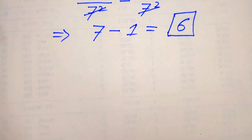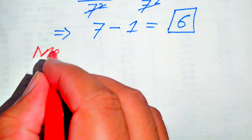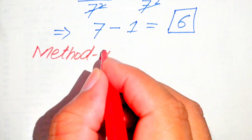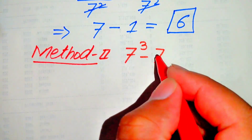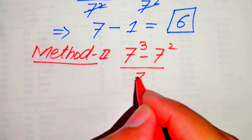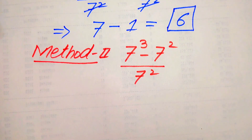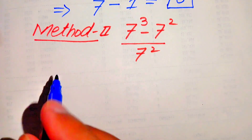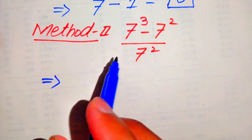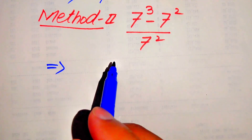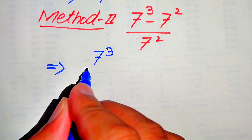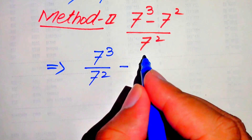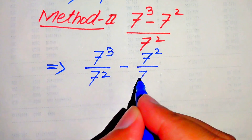Now we move to the second method. We rewrite the given question: 7 cubed minus 7 squared, divided by 7 squared. In the second method, we begin by breaking this fraction, writing it as 7 cubed over 7 squared, minus 7 squared over 7 squared.